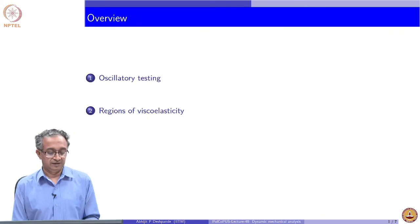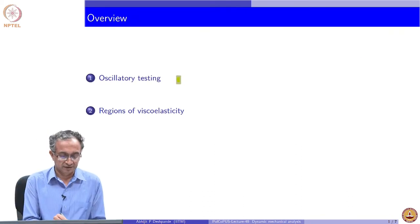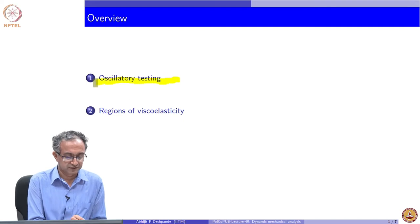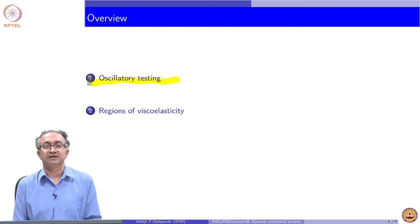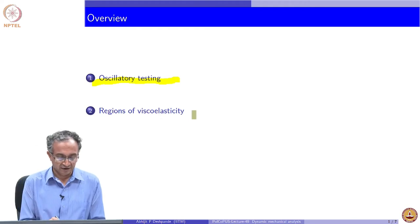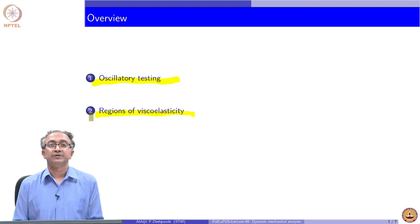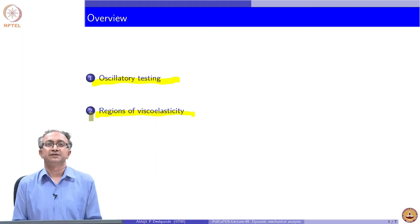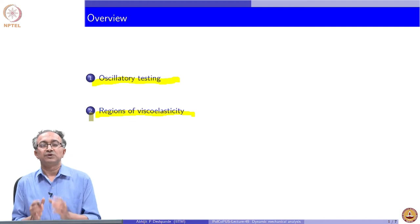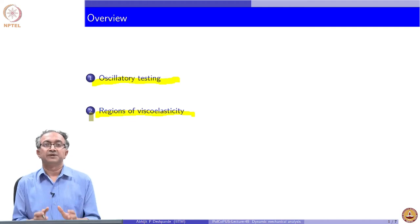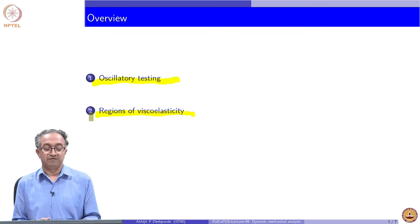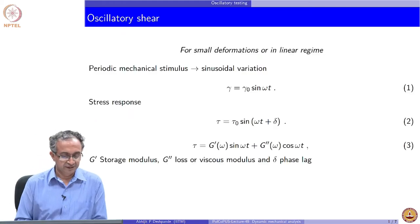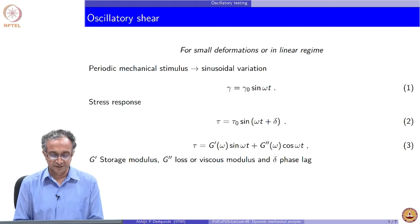We will look at this by first examining the predominant mode of testing used in dynamic mechanical analysis, which is oscillatory testing. We will look at results of the oscillatory test on a set of polymers and see how the overall response is closely related to what type of polymeric material we have. Let us begin by defining the oscillatory response.